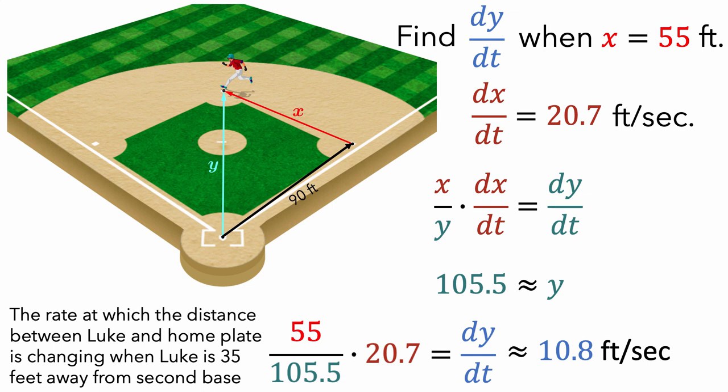So in this scenario, we used the Pythagorean theorem to model the situation, thought of x and y as functions of t, and then used the chain rule to relate the rates dx/dt and dy/dt to solve our problem.